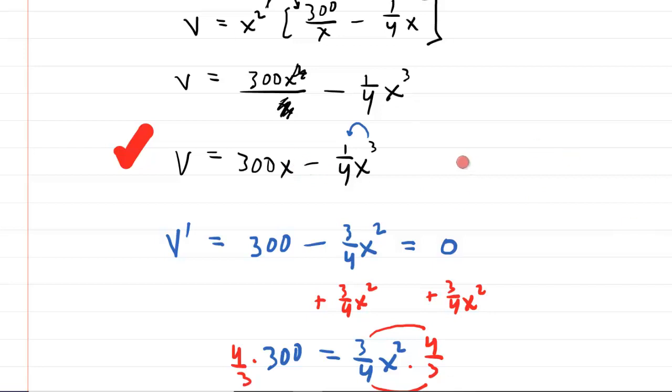So we're going to take 20. So V of 20 will equal 300 times 20 minus 1 fourth times 20 cubed. And hopefully your professor would allow you to use a calculator here. And if you plug this all in, you end up with a volume of 4,000.